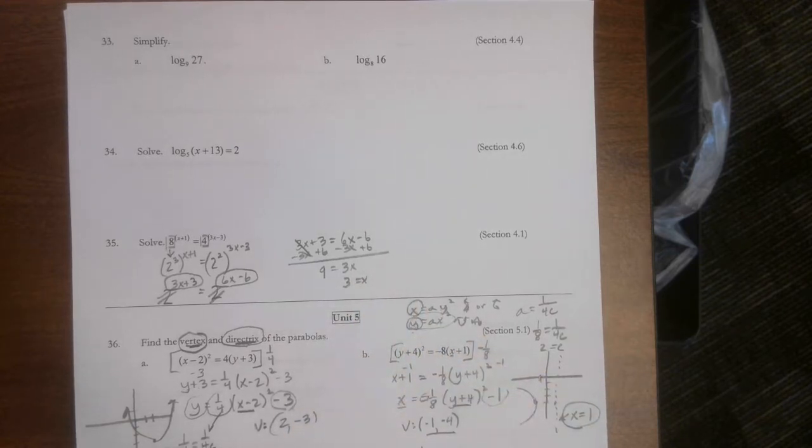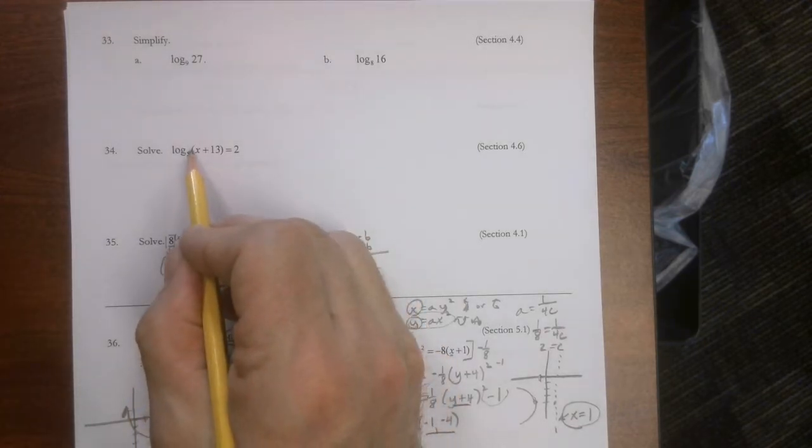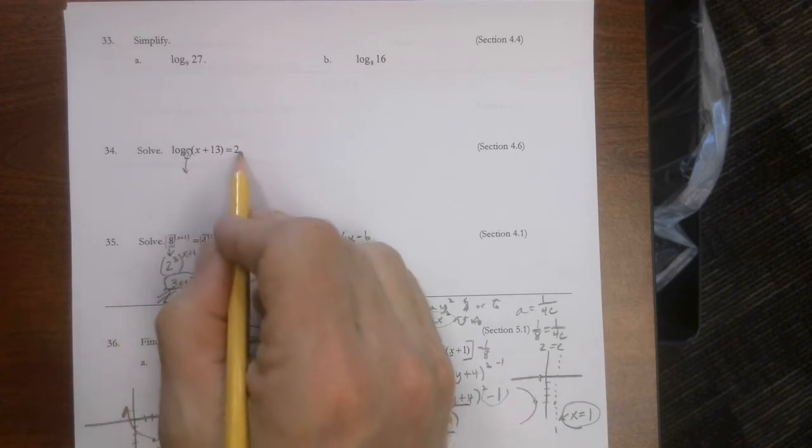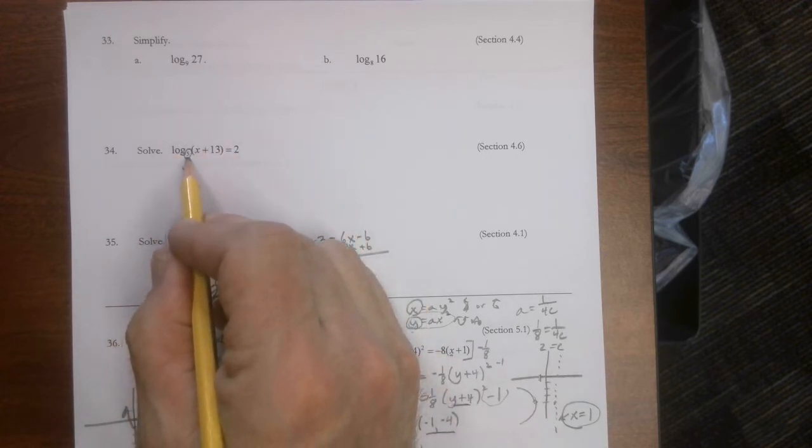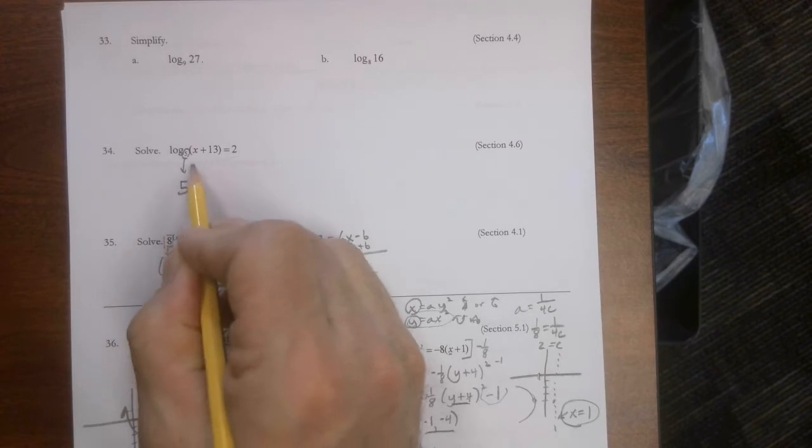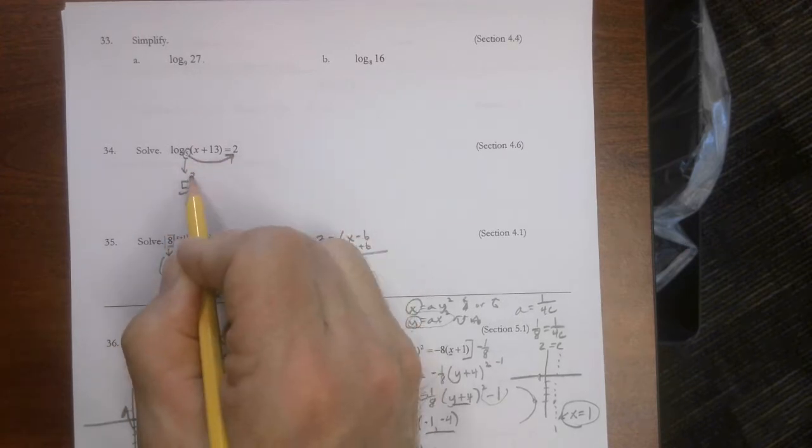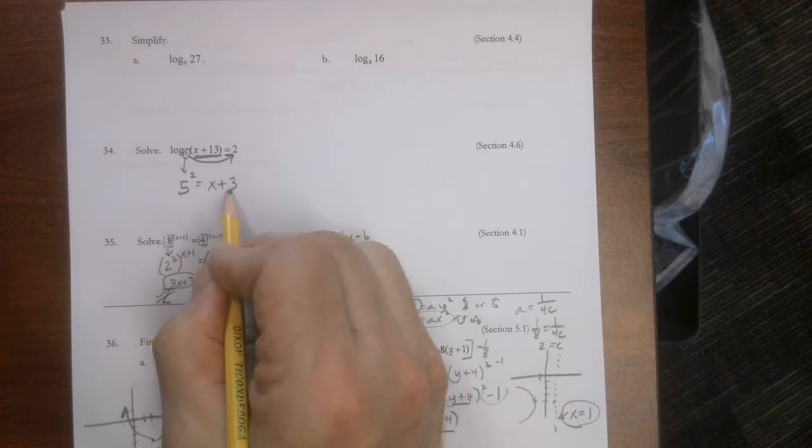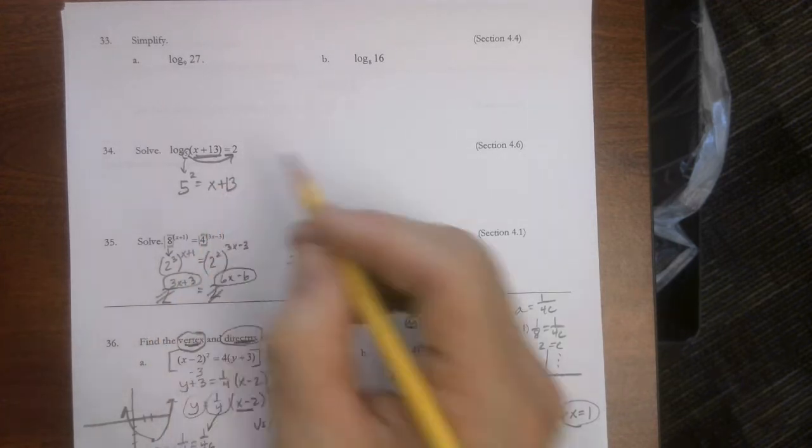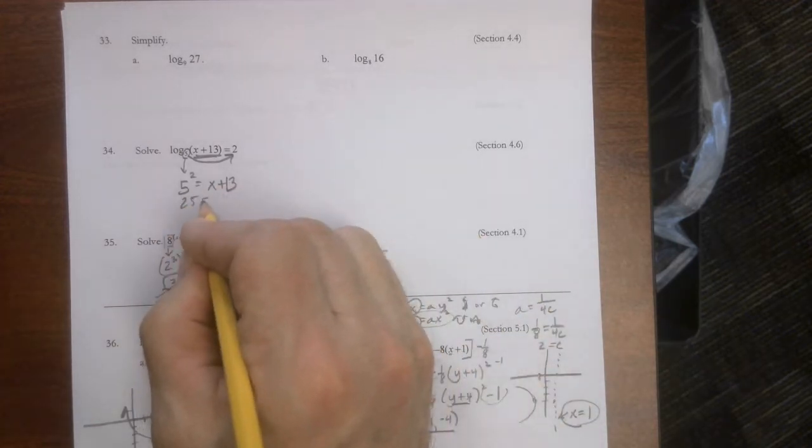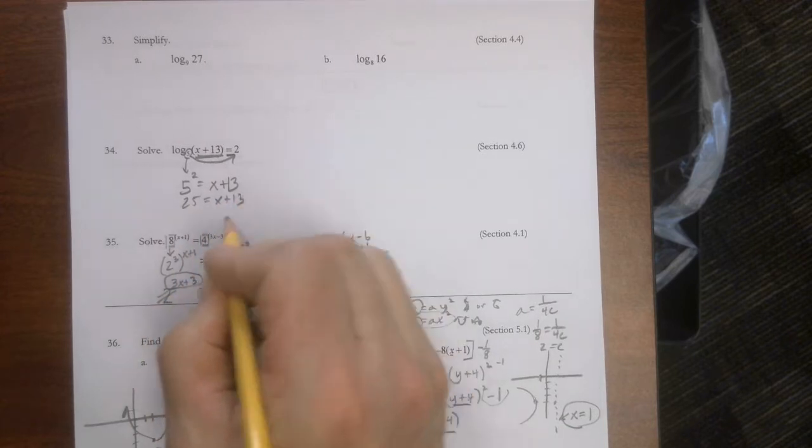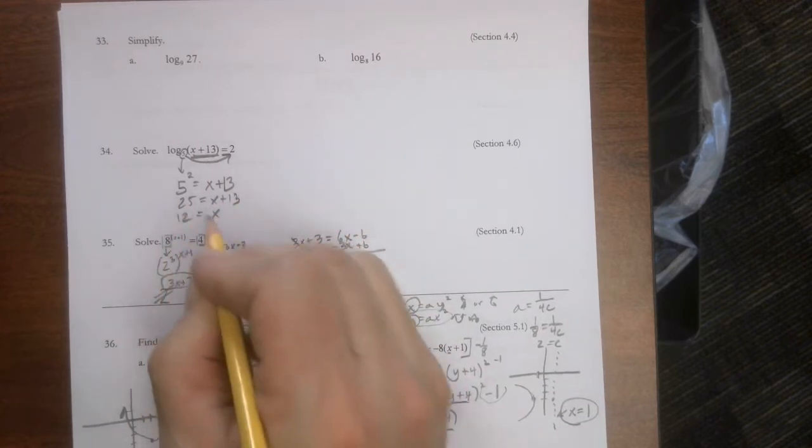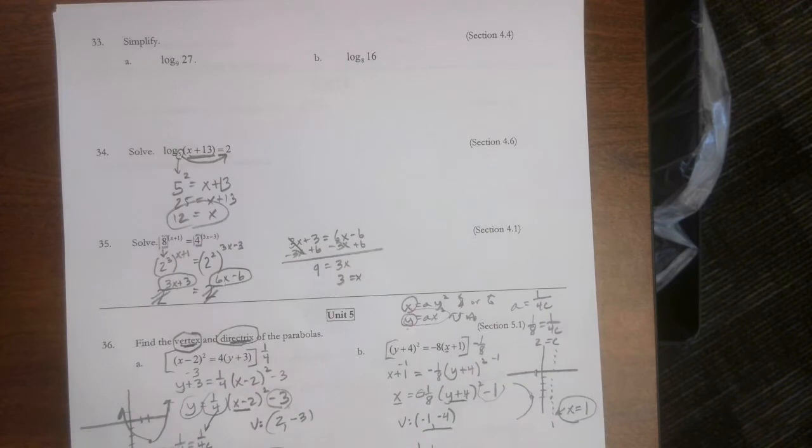All right, let's just keep moving on this. Number 34 is just a log. So we know to start here. That's our base. We're turning this logarithmic equation into a typical exponential equation. So that's 5 squared equals whatever's in our answer spot. And now it's just basic math. That's 13. So 25 equals x plus 13. If we subtract 13 from both sides, we get 12.